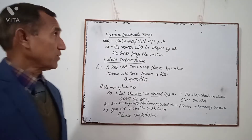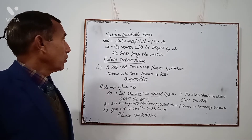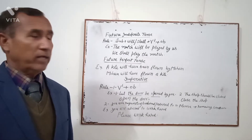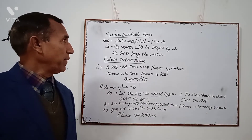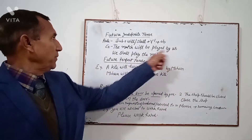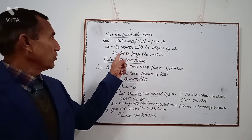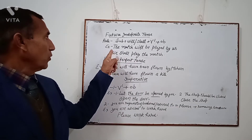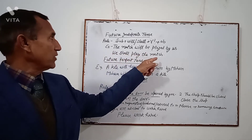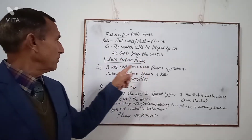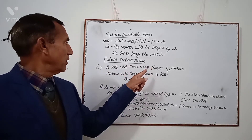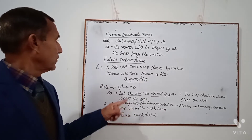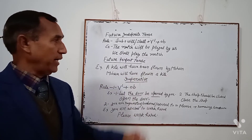Future Indefinite Tense. Rule: Subject + will/shall + V1 + Object. Example: 'The match will be played by us.' 'Us' will be subject; the subjective case of 'us' is 'we'. So: 'We shall play the match.' Future Perfect Tense: 'A kite will have been flown by Mohan.' So: 'Mohan will have flown a kite.'